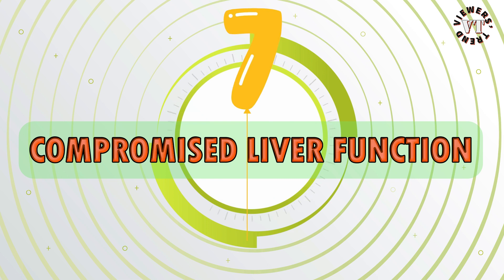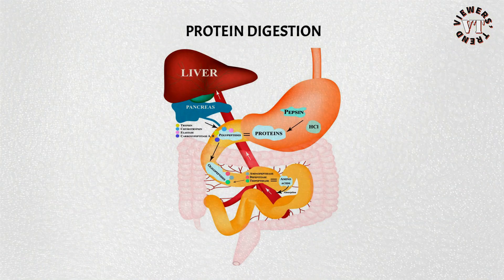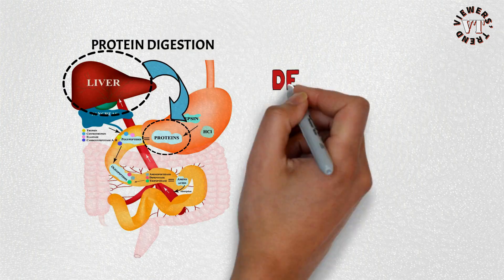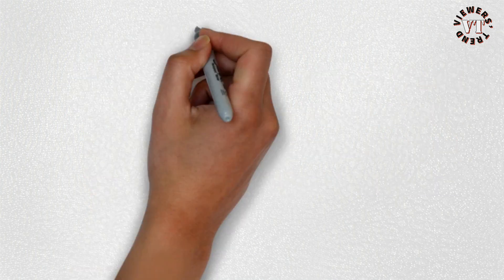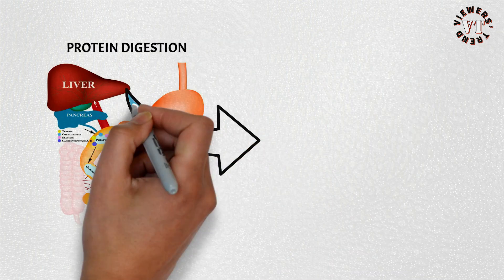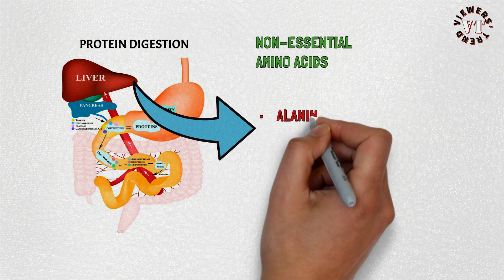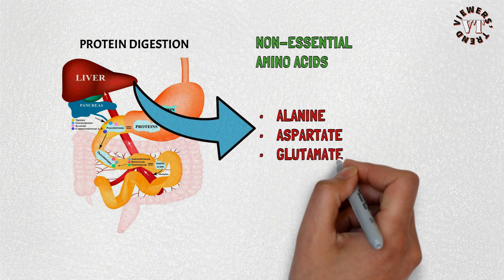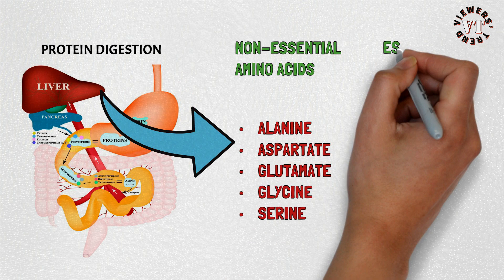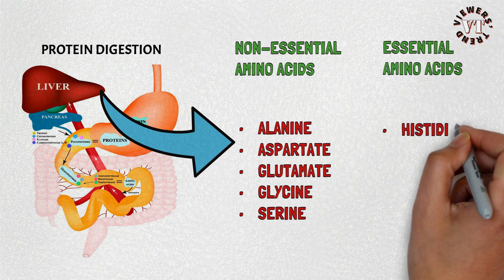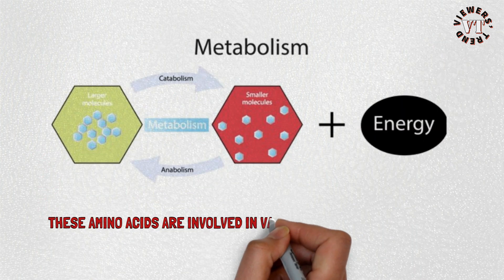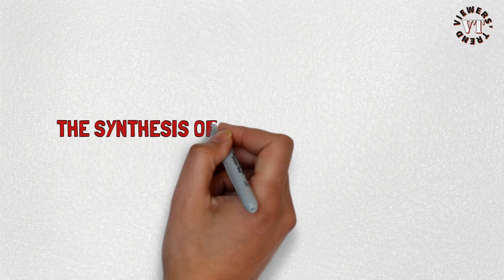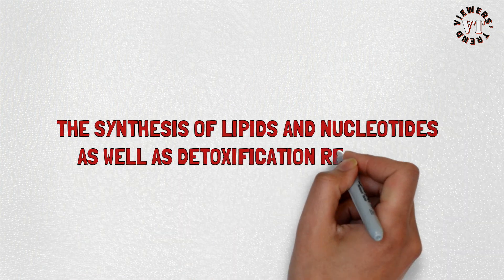7. Compromised Liver Function. The liver is an important organ for protein synthesis, degradation, and detoxification, as well as amino acid metabolism. In the liver, there are abundant non-essential amino acids such as alanine, aspartate, glutamate, glycine, and serine. These amino acids are involved in various cellular metabolisms, the synthesis of lipids and nucleotides, as well as detoxification reactions.